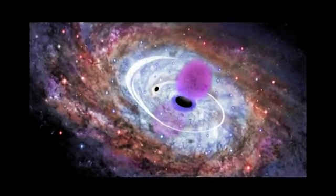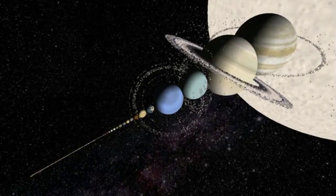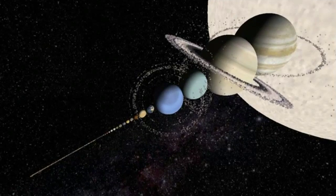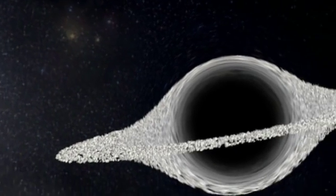Accretion disks limit the speed of black holes' growth. First, as gas and dust in the disks get close to black holes, traffic jams slow down any other material that's falling into them.